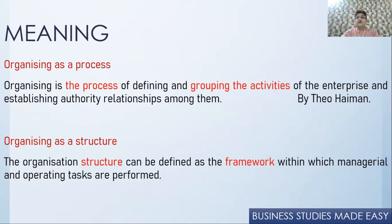Organizing as a process means grouping of activities of an enterprise and then establishing reporting relationships amongst them. In an organization there may be two thousand workers — there has to be some structure made so that everybody knows exactly what they have to do. Organizing as a structure means the framework, the backbone of an organization, in which all managerial activities are performed.